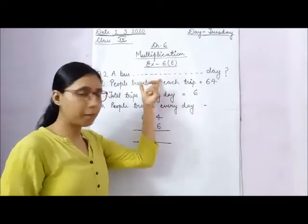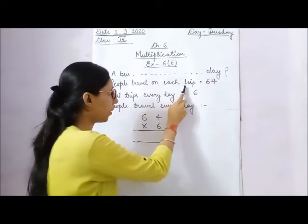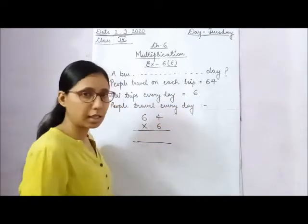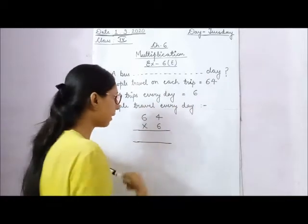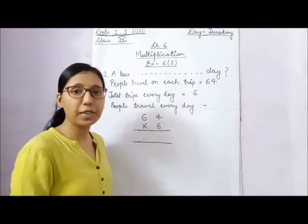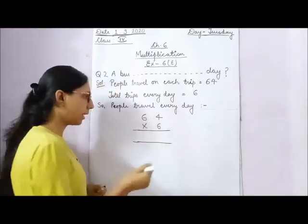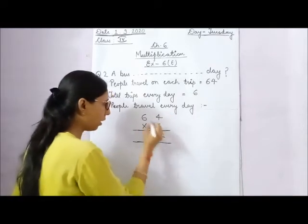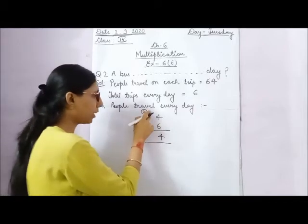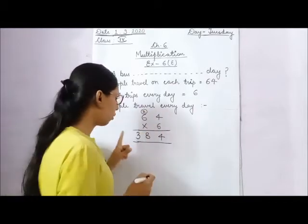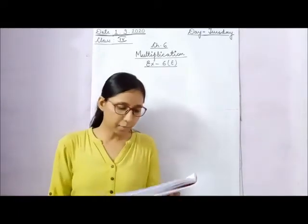First write the question in dash form, then the statements. 64 people travel on each trip, and there are 6 total trips every day. So 64 multiplied by 6: 6 into 4 is 24, write 4 and carry 2; 6 into 6 is 36, plus 2 is 38. So 384 people travel every day in the bus.